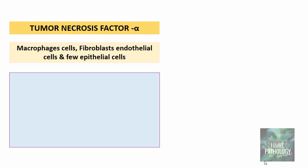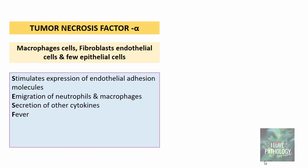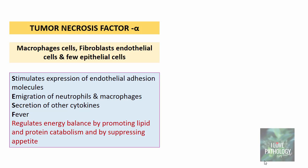The next important cytokine is tumor necrosis factor alpha, which is produced by macrophages, fibroblasts, endothelial cells, and few epithelial cells. Most functions of TNF-alpha overlap with interleukin 1: stimulating the expression of endothelial adhesion molecules, emigration of neutrophils and macrophages, secretion of other cytokines, and induction of fever. Importantly, TNF-alpha also regulates energy balance by promoting lipid and protein catabolism and suppressing appetite. This makes TNF-alpha responsible for muscle wasting resulting in cachexia in some chronic inflammatory conditions and in some tumors.